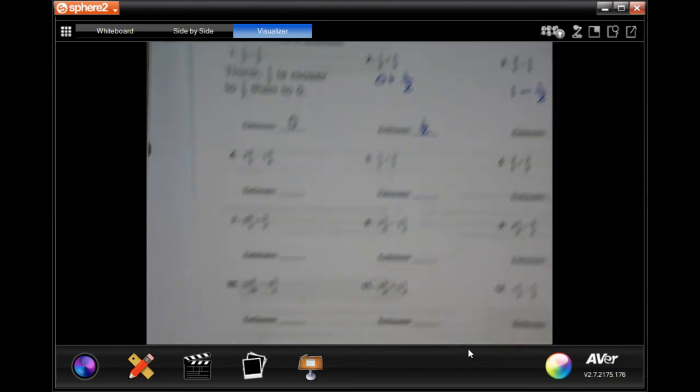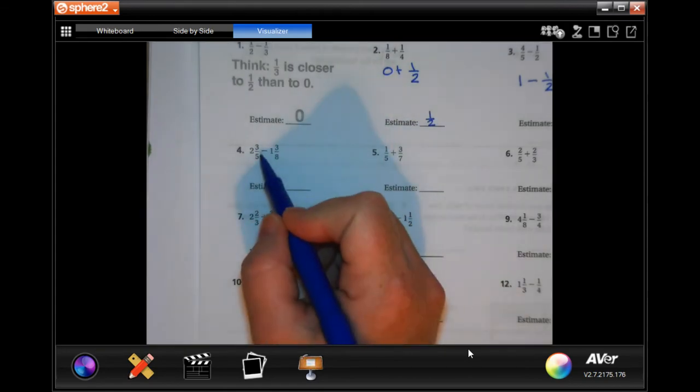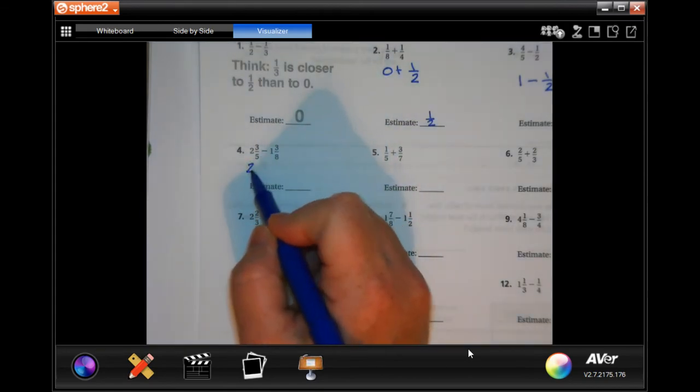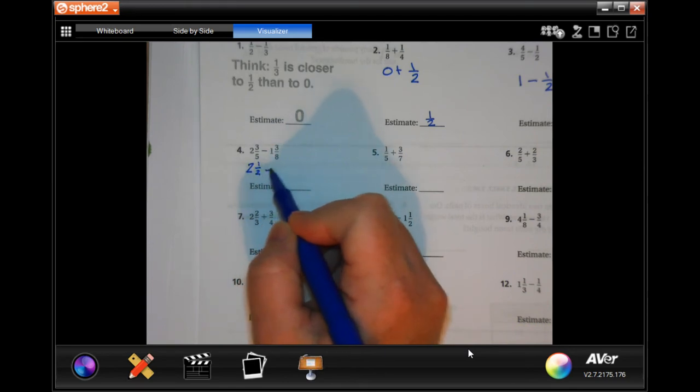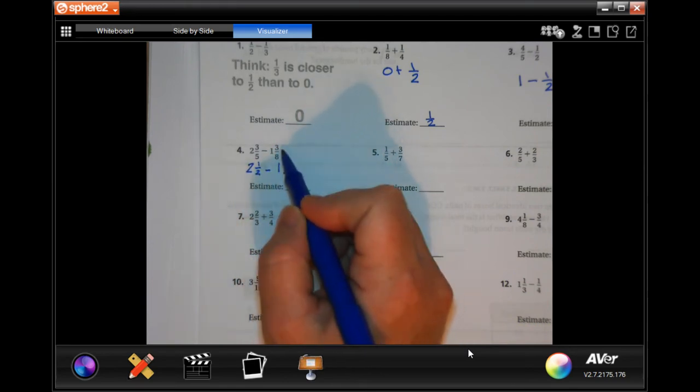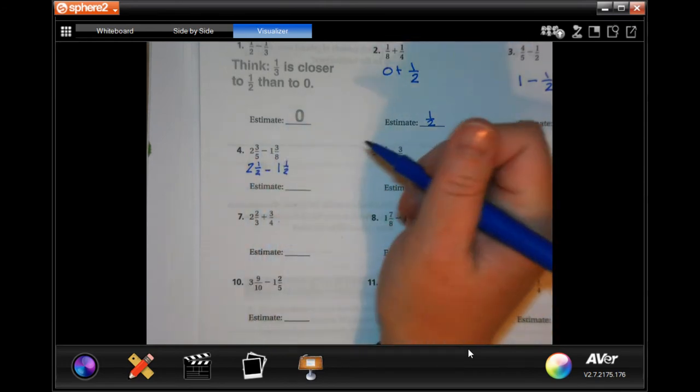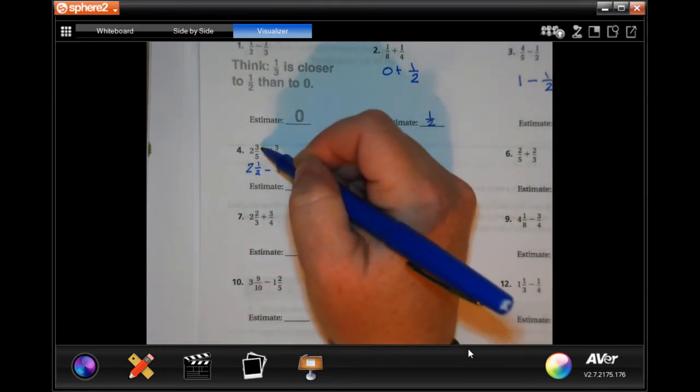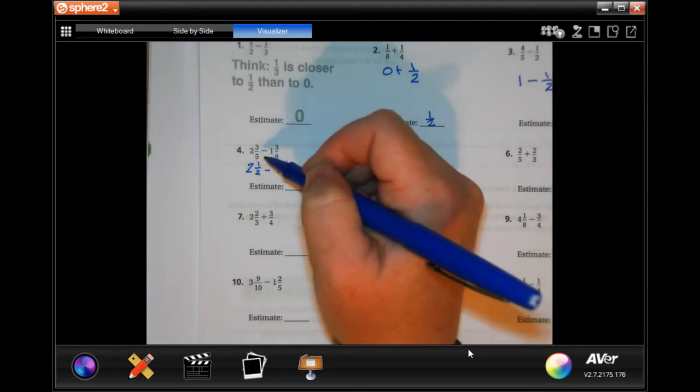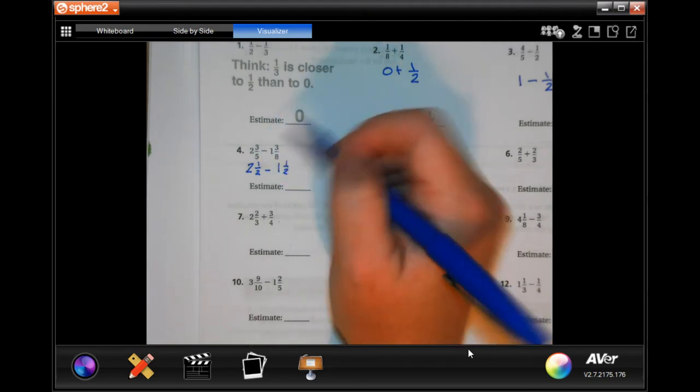All right, so 2 and 3/5, well 3/5 is about a half so we have about 2 and a half, minus 1 and 3/8 is about 1 and a half. The way I'm doing this guys is 3 is about half of 5, so I'm just saying it's about half.